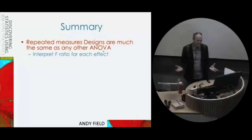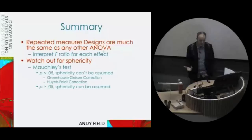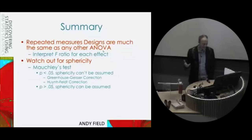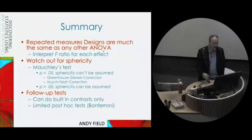So, repeated measures designs: basically what you're doing is the same as any other design — looking at an F ratio for each effect, whether it's a one-way or a factorial ANOVA. The extra thing you need to worry about is sphericity. Have a look at Mauchly's test; if it's significant then sphericity can't be assumed and use Greenhouse-Geisser corrected values (or Huynh-Feldt — but the default should probably be Greenhouse-Geisser). If Mauchly's test is not significant, assume sphericity and look at the top sphericity-assumed row for each effect. If you want to do follow-up tests, there are a limited set of post-hoc tests you can do for the main effects as well.